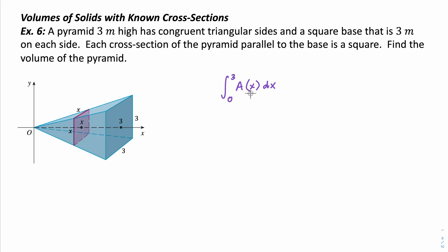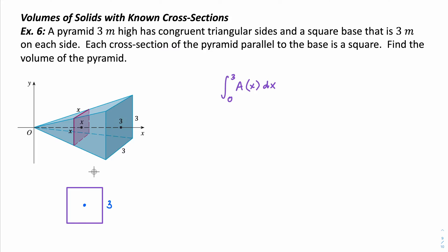We need to find the area of this cross section, so let's sketch a top-down view of what a cross section would look like. We know the cross section is going to be a square. It has its center on the x-axis, and the side lengths are x — because if we pick some x-coordinate that is x units away from the origin, the length of those sides equals x. So the area for this cross section is just A(x) = x².